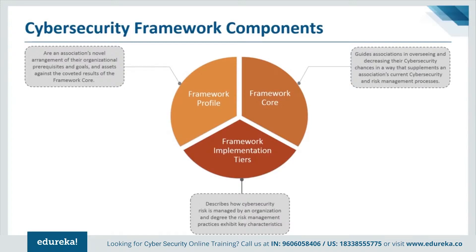The framework Implementation Tiers assist an organization by providing context on how it views cybersecurity risk management. The tiers guide organizations to consider the appropriate level of rigor for their cybersecurity program and are often used as a communication tool to discuss risk appetite, mission priority, and budget. The framework Profiles are an organization's unique alignment of their organizational requirements, objectives, risk appetite, and resources against the desired outcomes of the framework Core. Profiles are primarily used to identify and prioritize opportunities for improving cybersecurity at an organization.